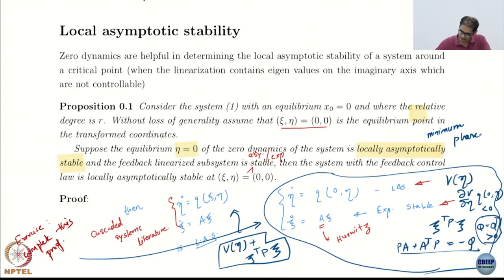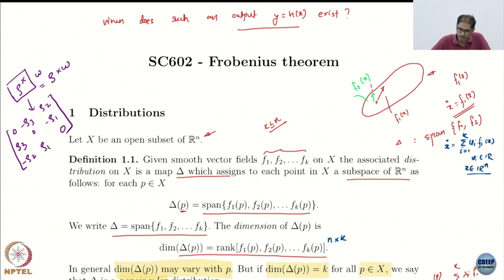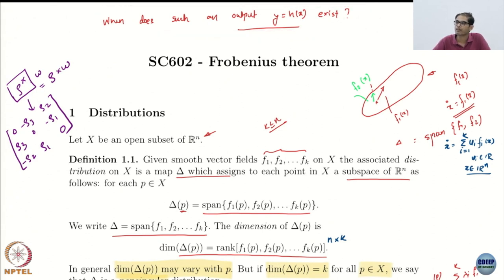So, I want you to verify as an exercise what happens if I use this V for the combined system — let us see what you can get. Now we move on to a more involved theory topic, also on feedback linearization. This is where we start to answer the question: when does such an output Y equals H(x) exist?